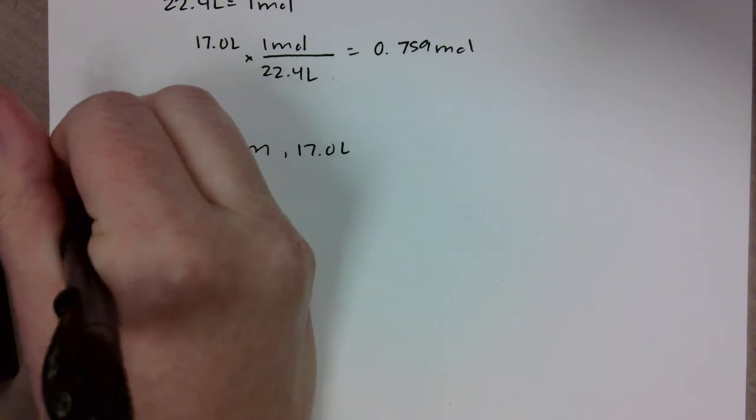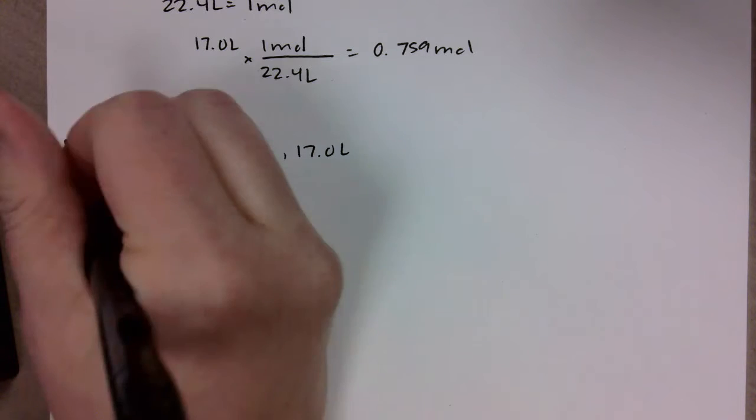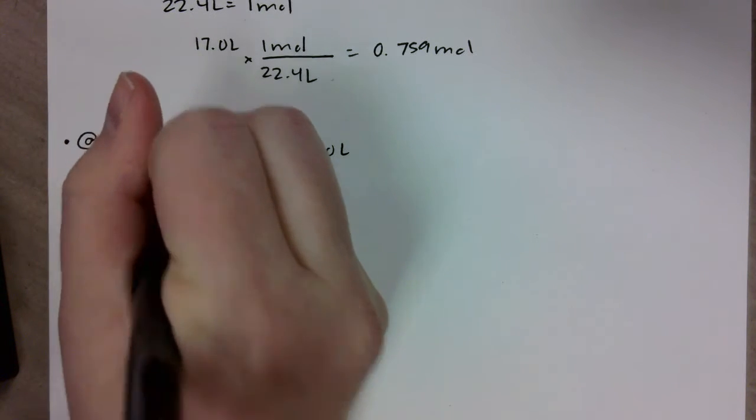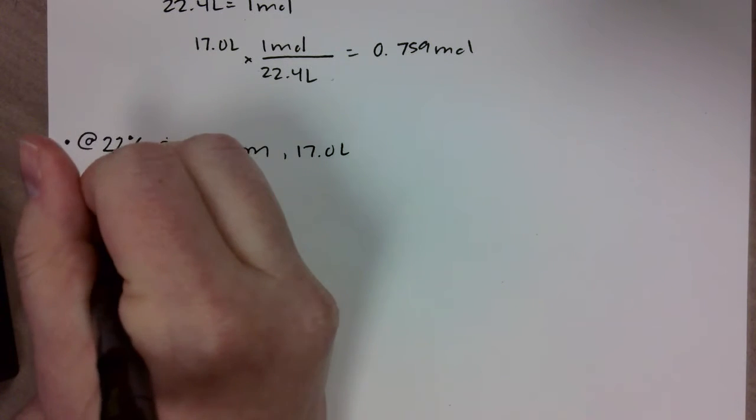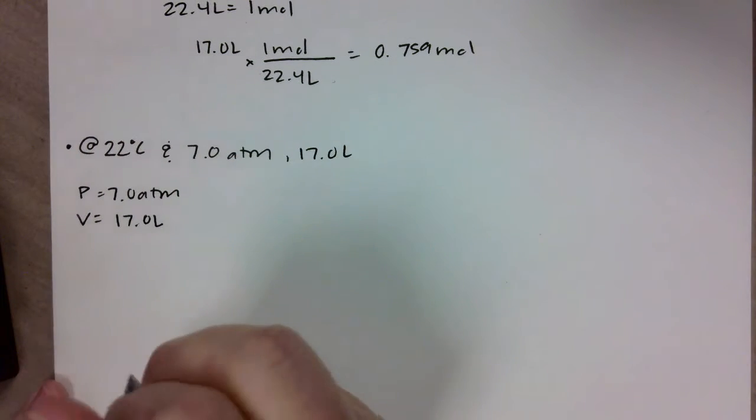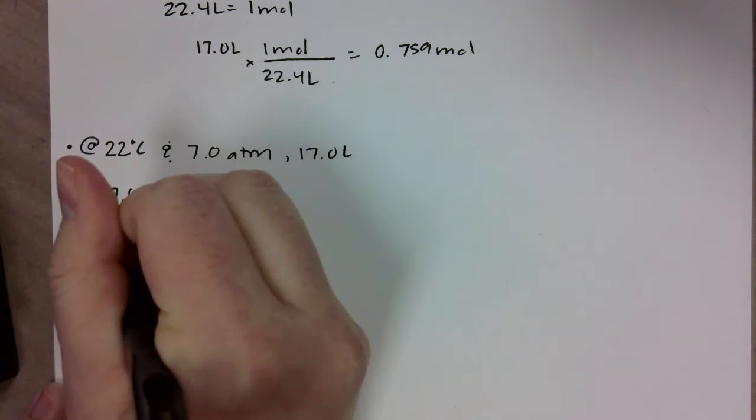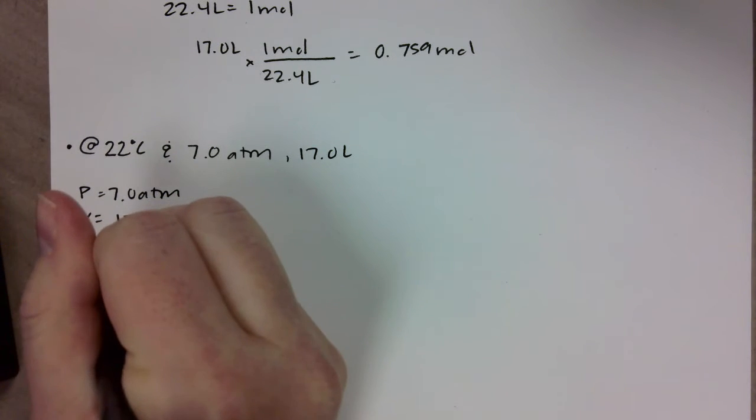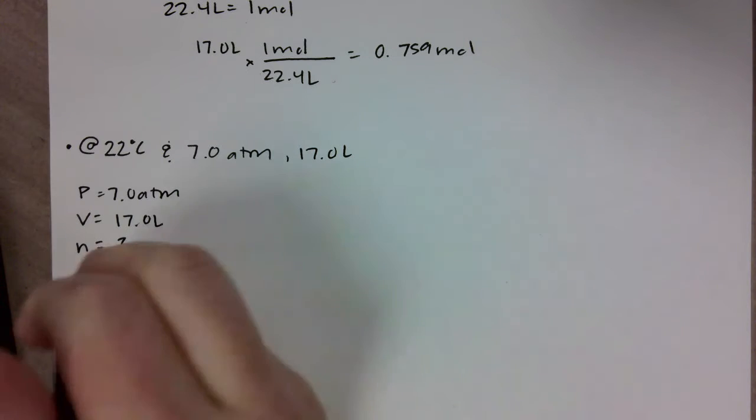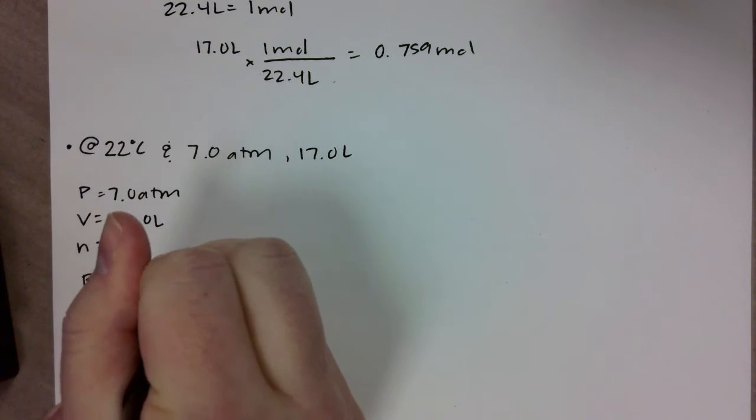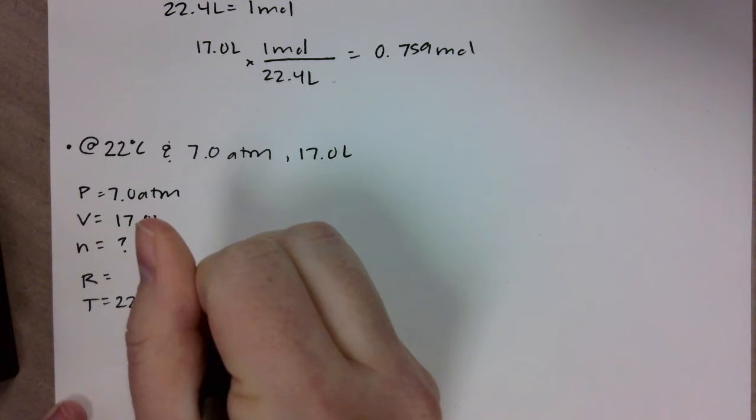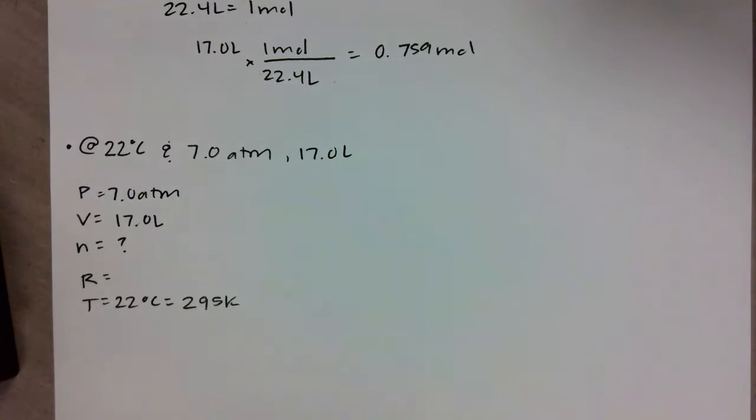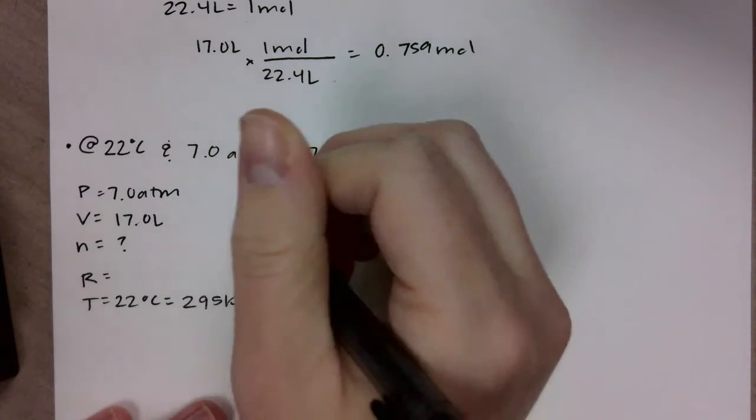I kind of always with these gas laws start to make a list. I think about what I've got in my problem. I have a pressure - my pressure is 7 atmospheres. Remember, if this isn't in atmospheres, you're probably going to want to convert it to atmospheres so it works with your constant. My V is 17 liters. n I do not know because I'm currently looking for that. r is my gas law constant so I'm not even going to write that down. My temperature is 22 degrees Celsius and we need to convert that to Kelvin, so my temperature is 295 Kelvin.